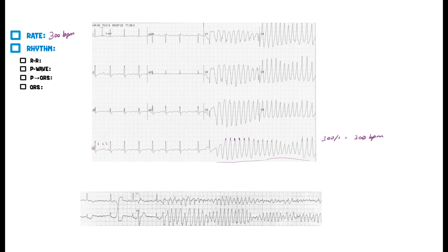This arrhythmia is going super fast — 300 beats per minute. That's the first thing. Second thing: R-to-R interval — is it the same? Starting from this point here: one box, one box, one box, one box, consistently about one box. That's 300 beats per minute consistently. The amplitude might differ a little because it's kind of twisting around the baseline — which is a key word for this one called torsades.